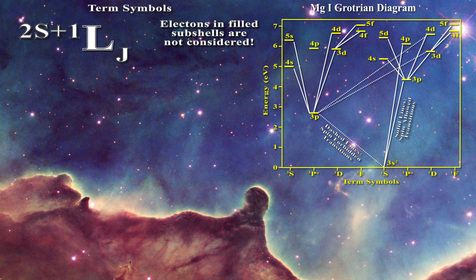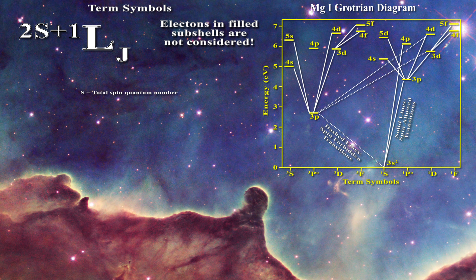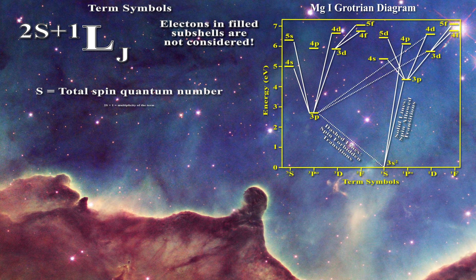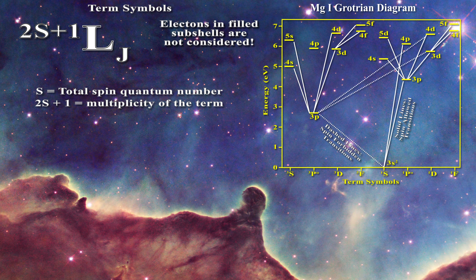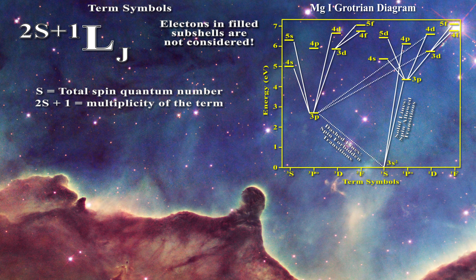Let us analyze in detail what each portion of the term symbol represents. The letter S reveals the total spin quantum number of the atom. 2S + 1 is known as the multiplicity of the term symbol. Usually the value of S is determined and only the multiplicity is presented in the upper left. Since the multiplicity is equal to 2S + 1, if one presents the multiplicity then one knows the value of S.